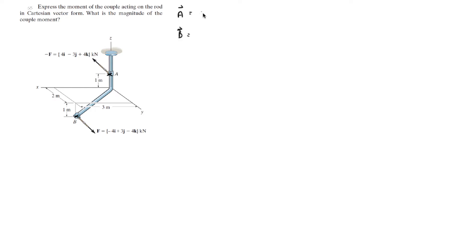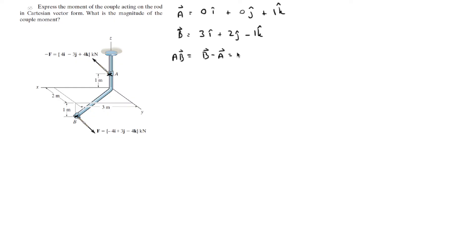Point A is located at 0i + 0j + 1k, and point B is located at 3i + 2j - 1k. Now that we have A and B, we can find the vector from A to B by subtracting A from B, giving us AB = 3i + 2j - 2k.